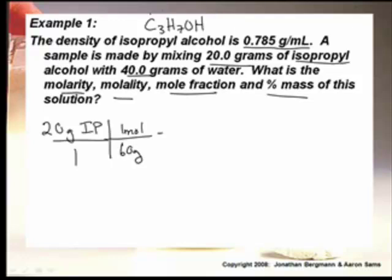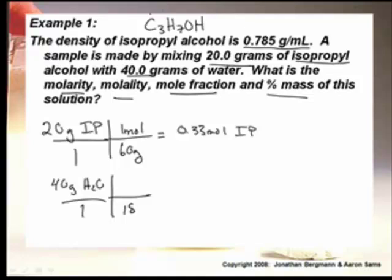Mr. Sams, what is the molar mass of C3H7OH? 60 grams per mole. So 60 grams in one mole. If we have 20 grams of isopropyl alcohol, that gives us 0.33 moles of isopropyl alcohol. And then we've got 40 grams of water - with 18 grams per mole, that gives us 2.22 moles of water.